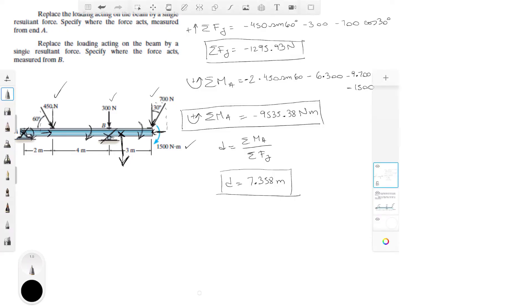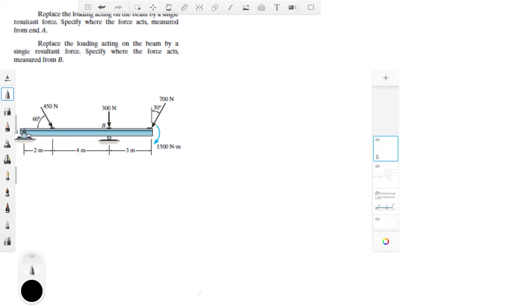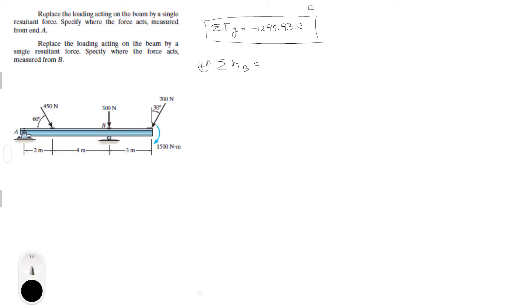For the second part, remember that we already found that the sum of the forces at Y is equal to minus 1295.93 newtons. With this information you know that the sum of the moments at B, assuming counterclockwise is positive, is equal to...